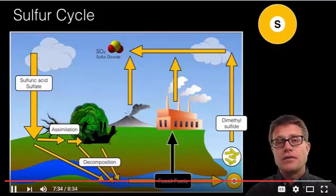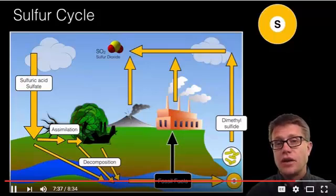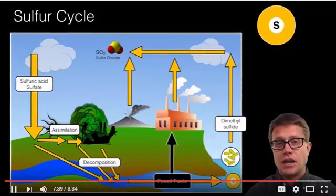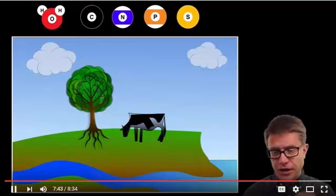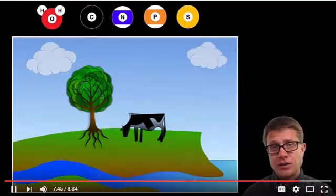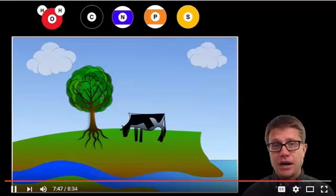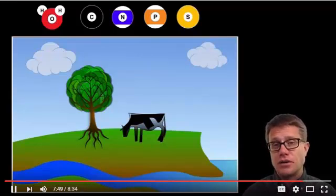But we can also have that rock cycle forming some of that into fossil fuels which can be extracted again and the cycle continues. And so for each of these cycles you should be able to figure out how do plants get it? How do animals get it? And then how does it recycle back through the atmosphere, hydrosphere and lithosphere?